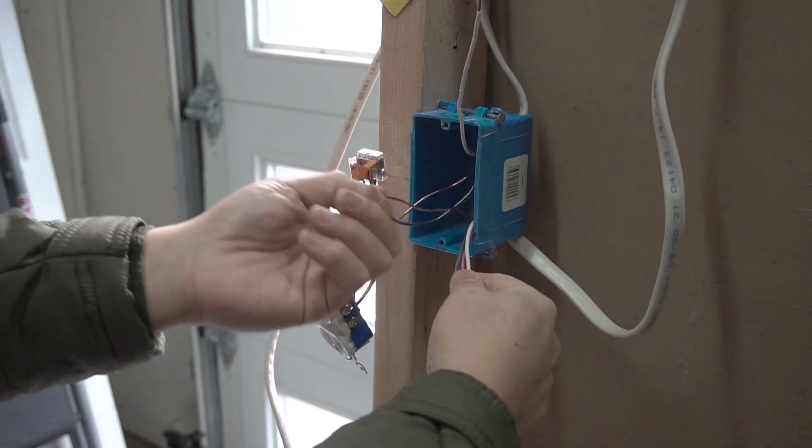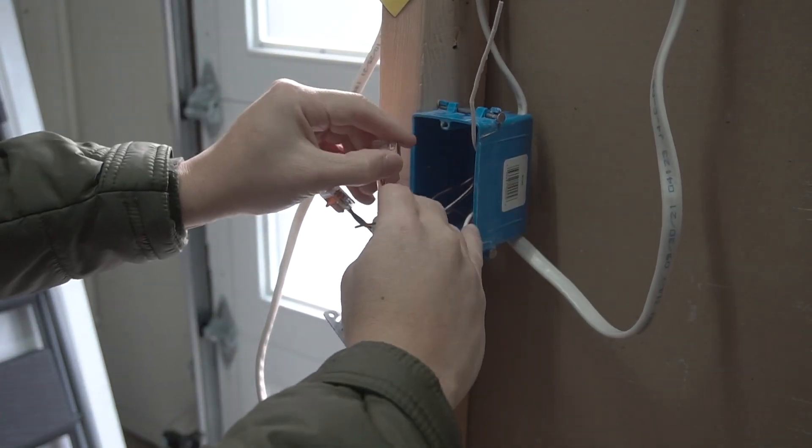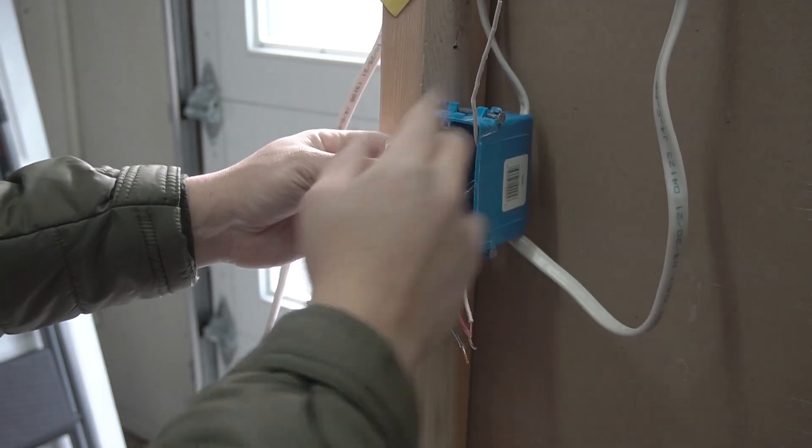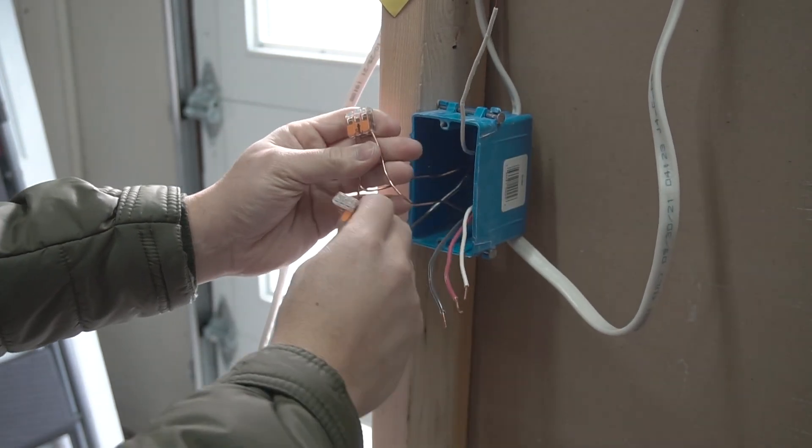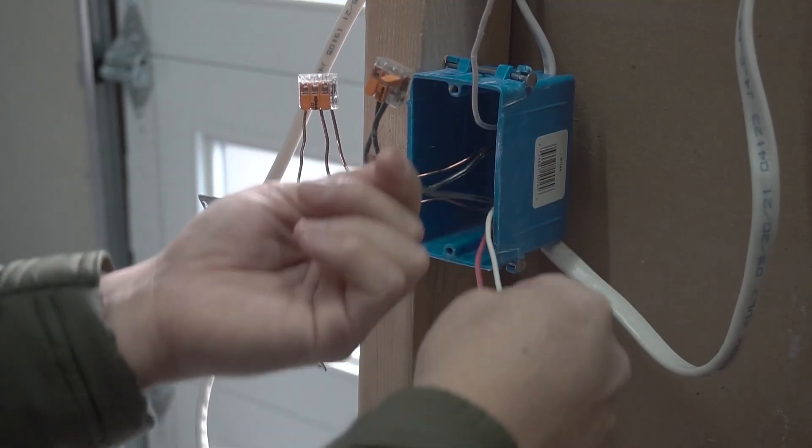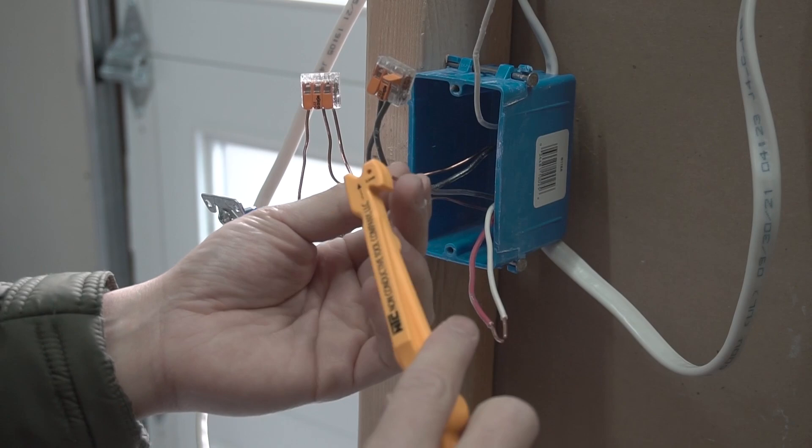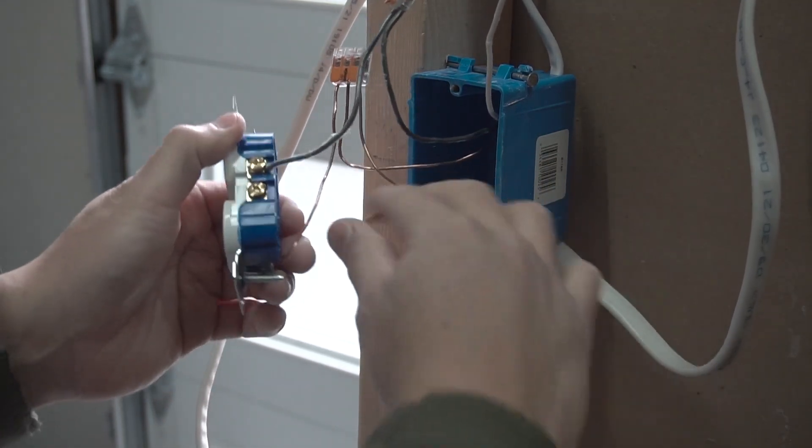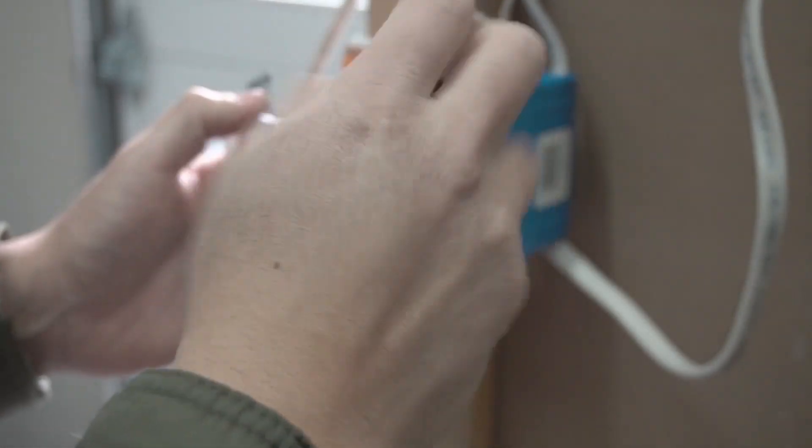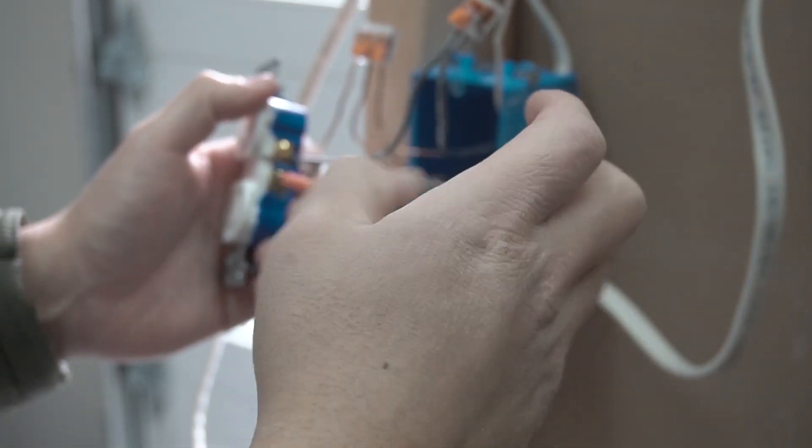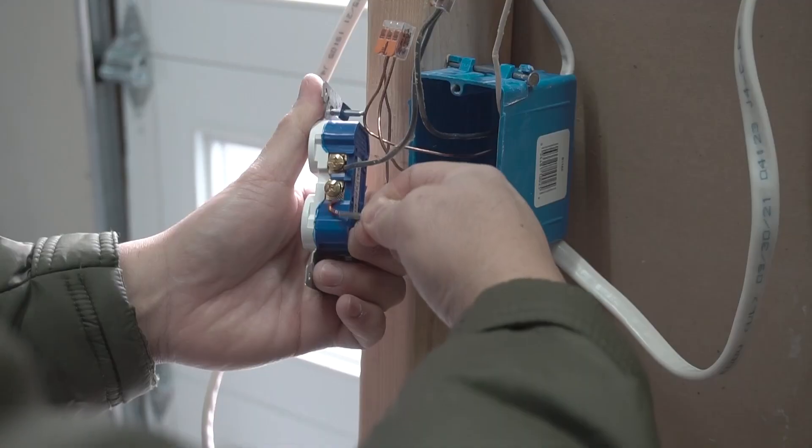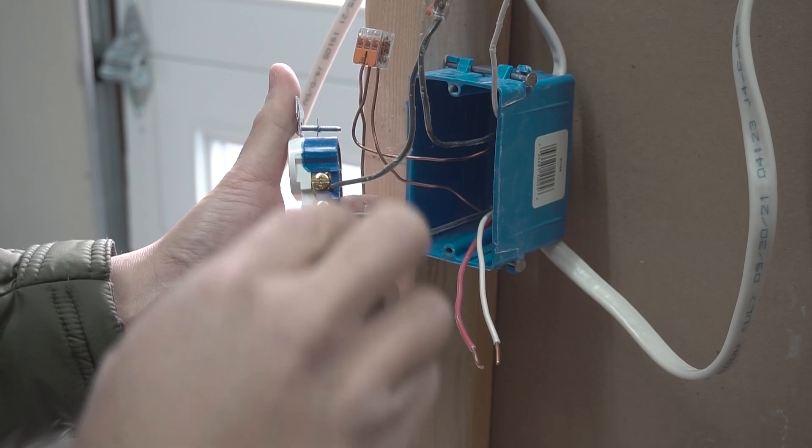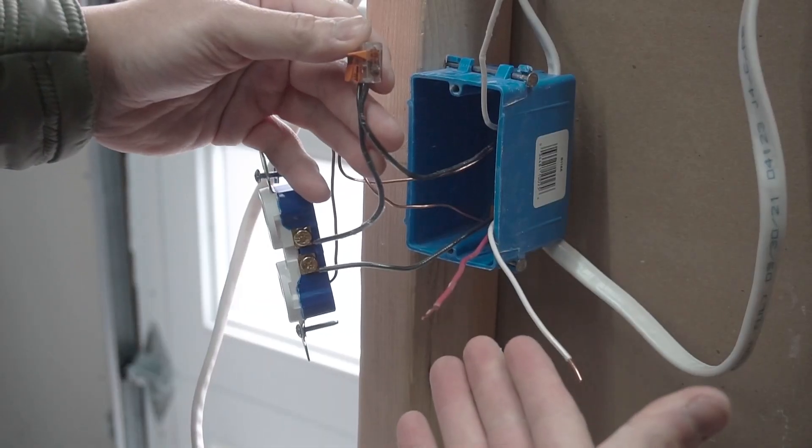So let's start off with the easy part. Take the ground from the 14-3 and attach it to the last lever onto where all the grounds are connected. Don't worry, we're going to go over this one more time again. Now this is very important. Take the black from the 14-3, make a loop, and we're going to attach that onto the bottom terminal. Put that in a clockwise manner. Tighten that down real well.